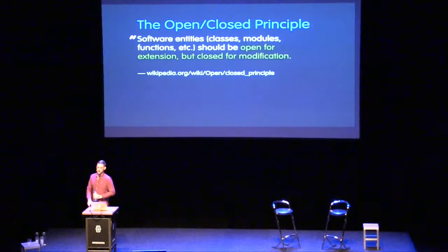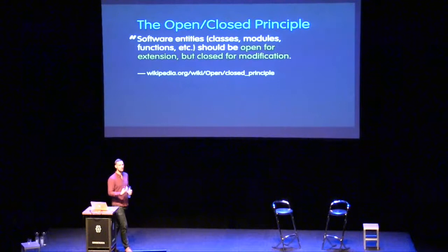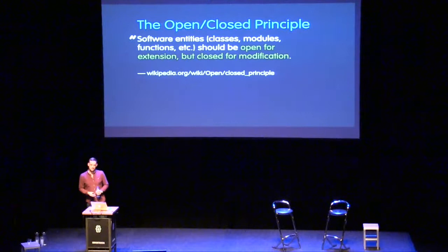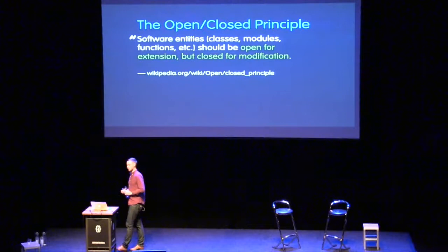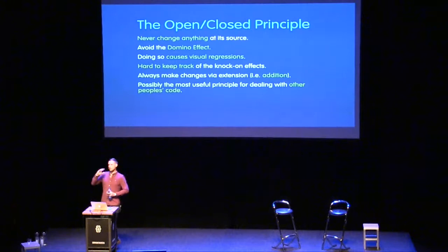Open for extension, closed for modification — anytime we want to change anything, we can't go back and change it at its source. We can't change something that already exists. If we want changed functionality, we have to always build forwards — add additional CSS. It sounds counterintuitive, but in a hostile or legacy environment, even though it will increase the size of your codebase, it's much safer to adhere to the Open/Closed Principle. Never change anything at its source.